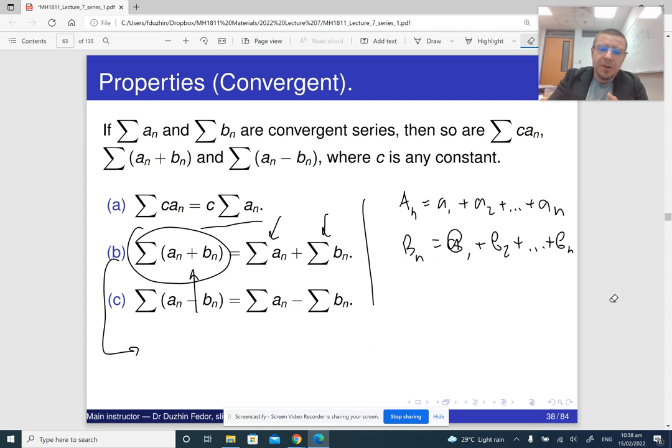Imagine that if instead of a sum you had a product, then it wouldn't work. Because if you consider the series, the sum from 1 to infinity of a_n times b_n, and if you take its partial sum, so a_1 b_1 plus a_2 b_2 plus and so on plus a_n b_n, then this does not equal to the product of the partial sums.